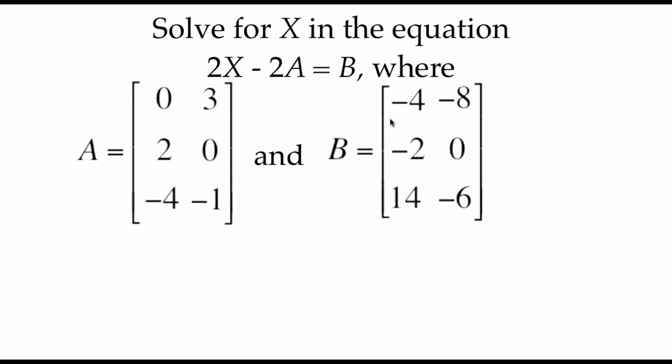Last example, we're going to do a little bit of equation solving with matrices. So here we've got the equation 2x minus 2a equals b and x, a, and b all stand for matrices. And we know what our matrix a looks like. It's a 0, 3, 2, 0, negative 4, negative 1 matrix. And we know our matrix b is negative 4, negative 8, negative 2, 0, 14, negative 6. We want to figure out what that matrix x looks like. So if we set up our equation, we've got two times this matrix x minus two times our A matrix, which I'm just going to fill in all of that information, 0, 3, 2, 0, negative 4, negative 1. And that's going to equal our B matrix, which again, just filling in that information, negative 4, negative 8, negative 2, 0, 14, negative 6.